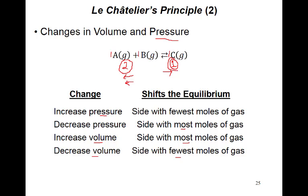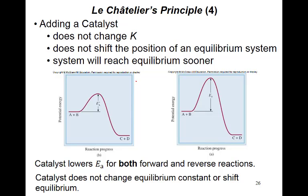If the pressure increases, the reaction goes toward the fewer moles. If the pressure decreases, it goes toward the higher number of moles. You have to check the chemical equation for the number of moles of reactants vs. products after removing pure solids and pure liquids. Don't forget to remove pure solids and pure liquids before counting moles.